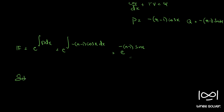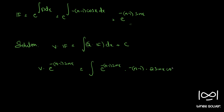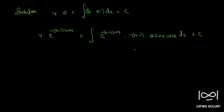The solution to such an equation is given by v times the integrating factor equals the integral of q times the integrating factor. So we have v times e raised to minus (n minus 1) sin(x) equals the integral of q, where q is minus (n minus 1) sin(2x), which we write as 2 sin(x) cos(x) dx.